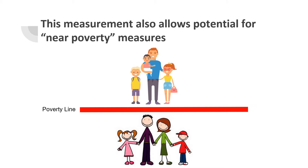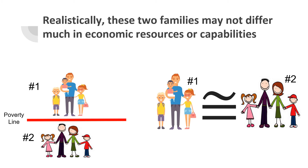It is also important to know about people who are just over the poverty line, because they can be at risk for falling below. It's good to have policies in place to keep them buoyant so they don't fall into poverty — it is better to take care of problems before they become bigger ones. Though family 1 is technically just above the poverty line, they are likely very similar to family 2 who falls just below it. Family 1 is probably still struggling, even though they are not considered impoverished according to current standards.